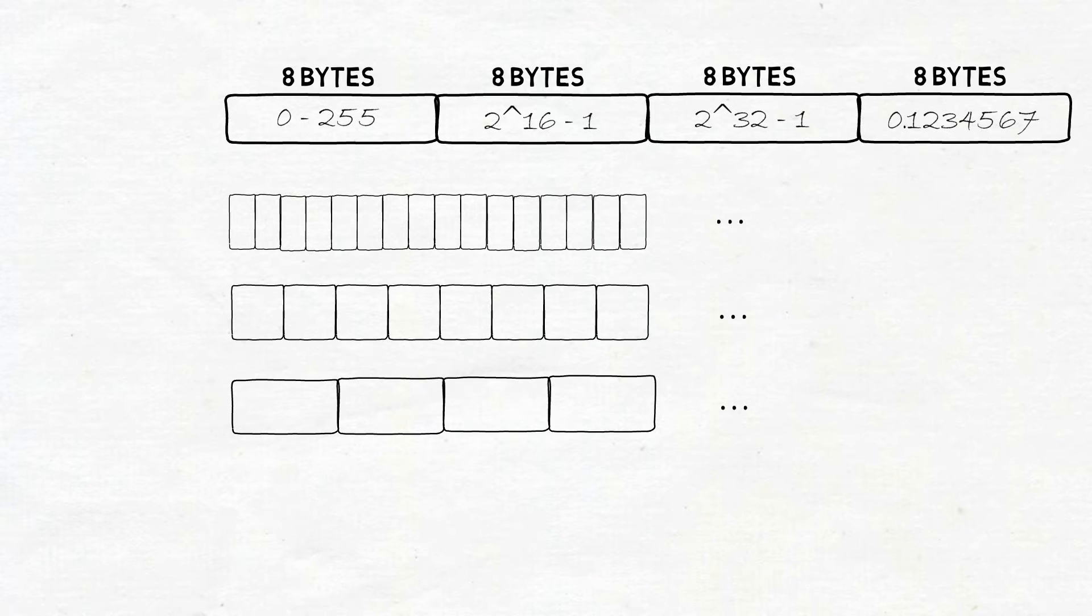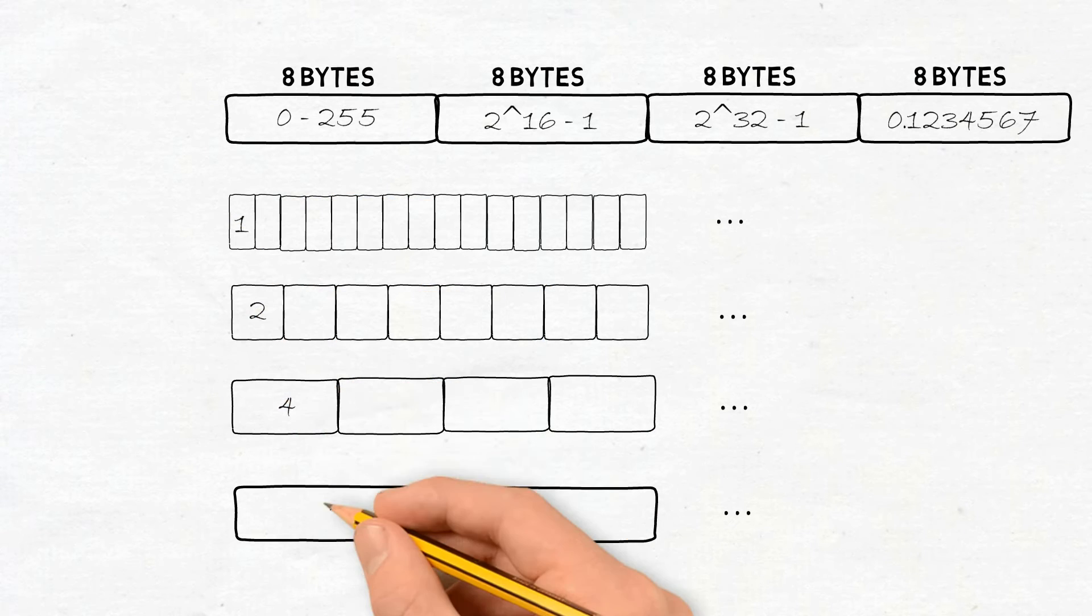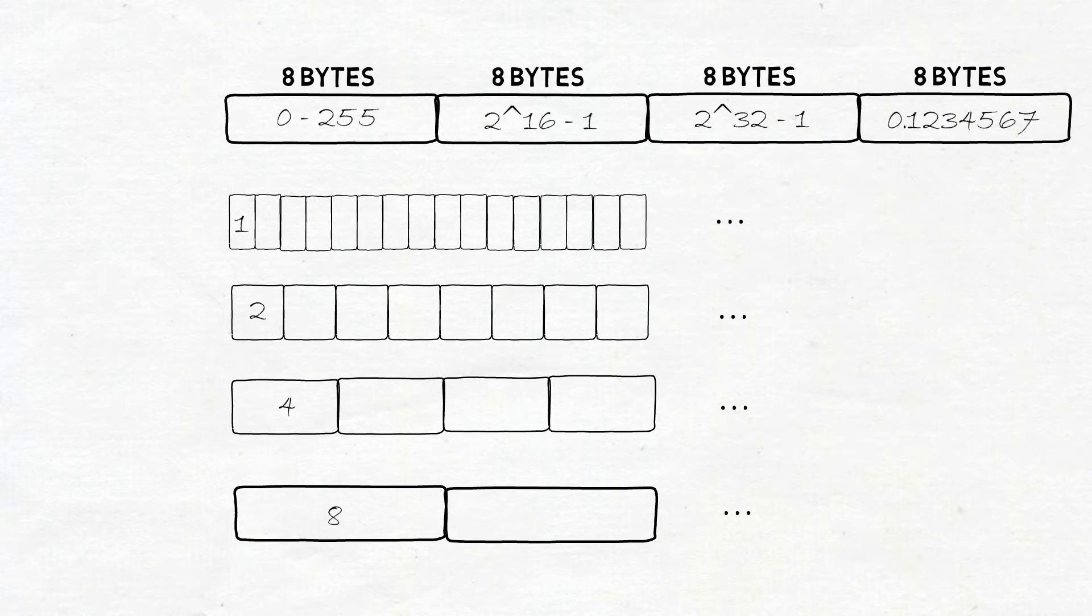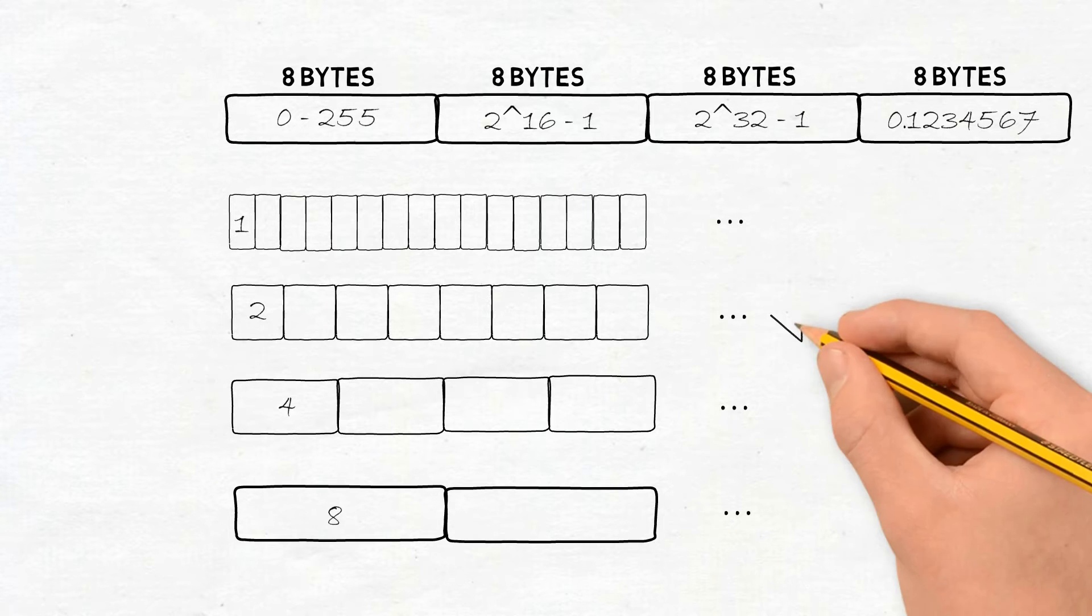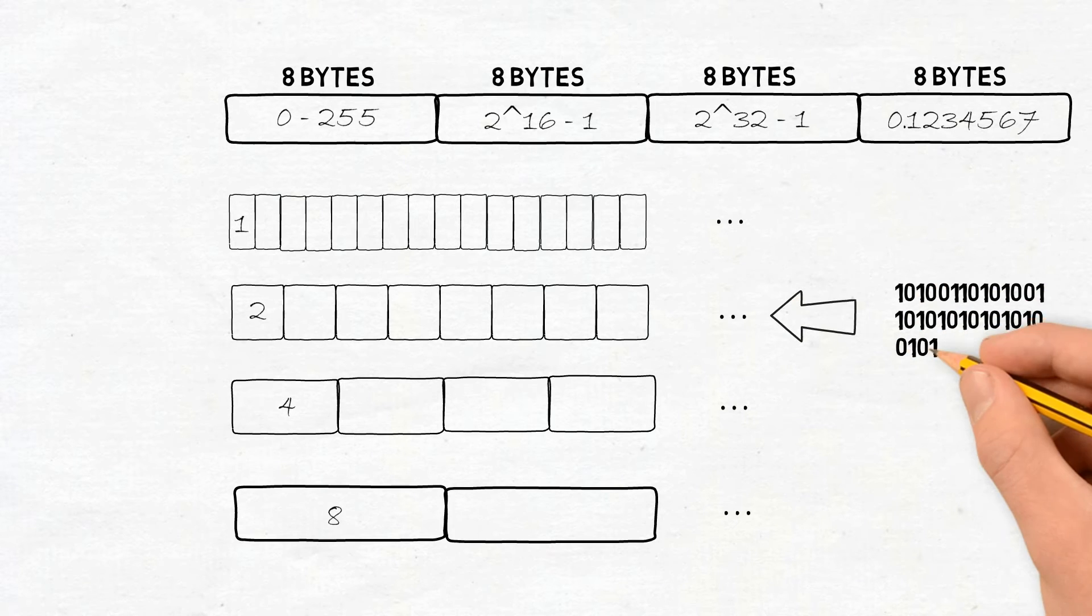Typed arrays allow us to have these contiguous blocks for signed and unsigned integers of eight, 16, 32, or 64-bit, as well as 32-bit or 64-bit floating numbers. So typed arrays allow us to be a lot more efficient, as well as being able to transfer the binary data in the format expected, for example, as 16-bit contiguous integers, rather than the 64-bit floating-point numbers.